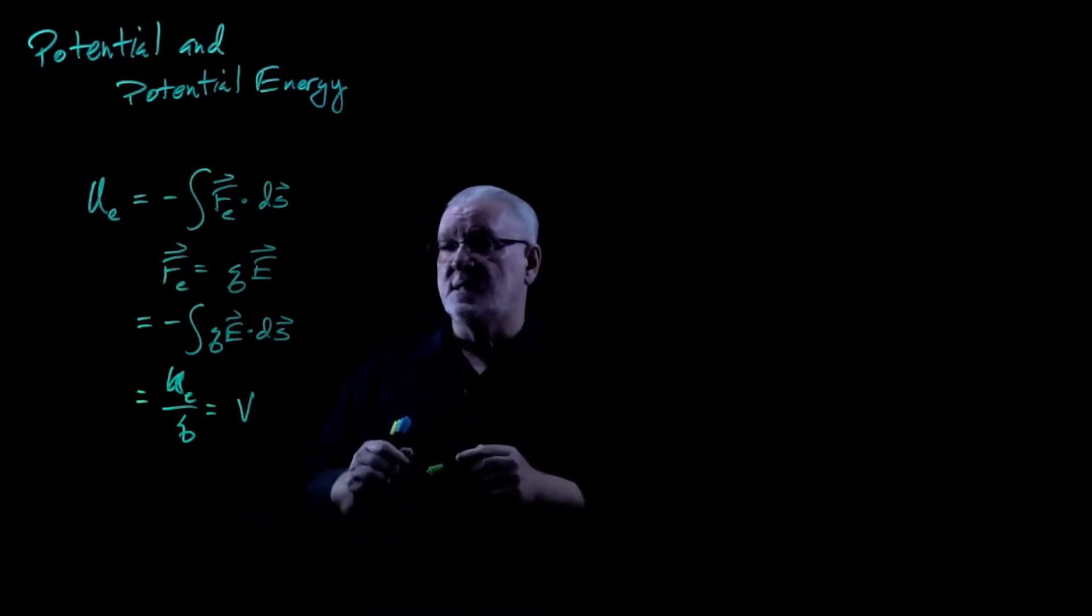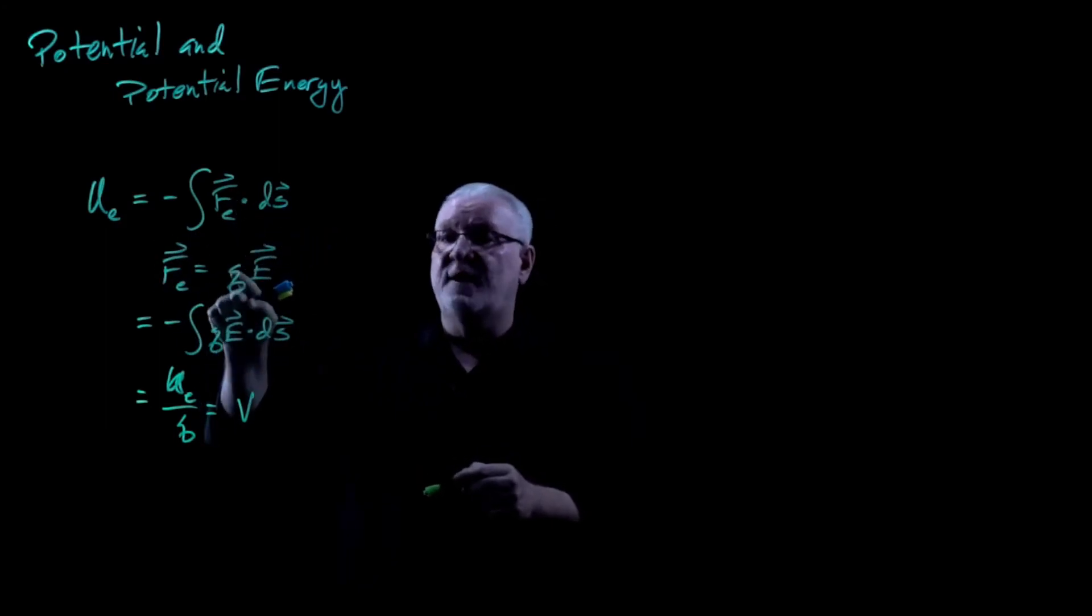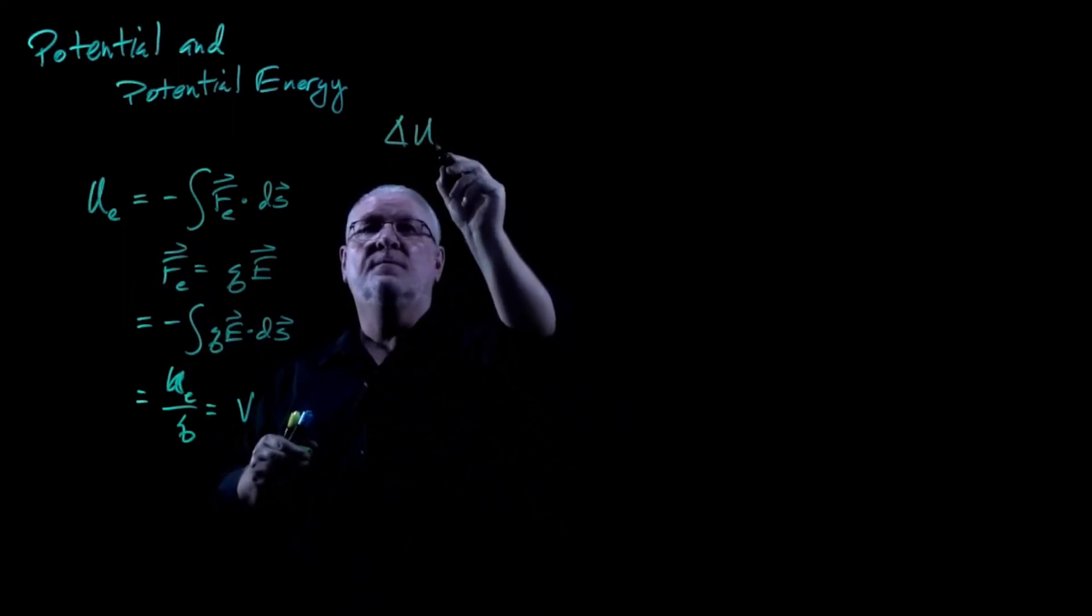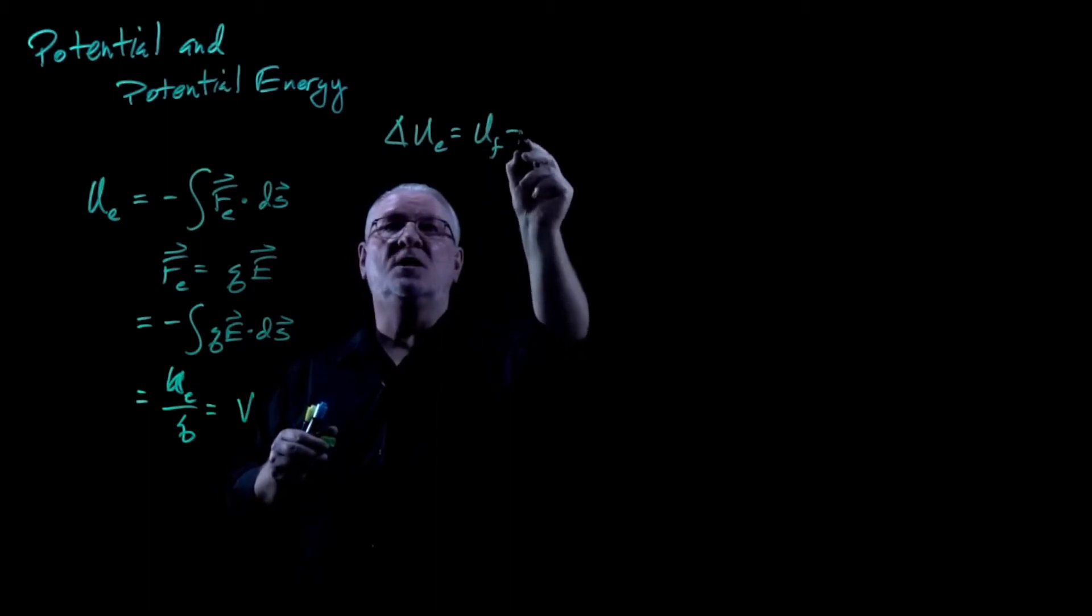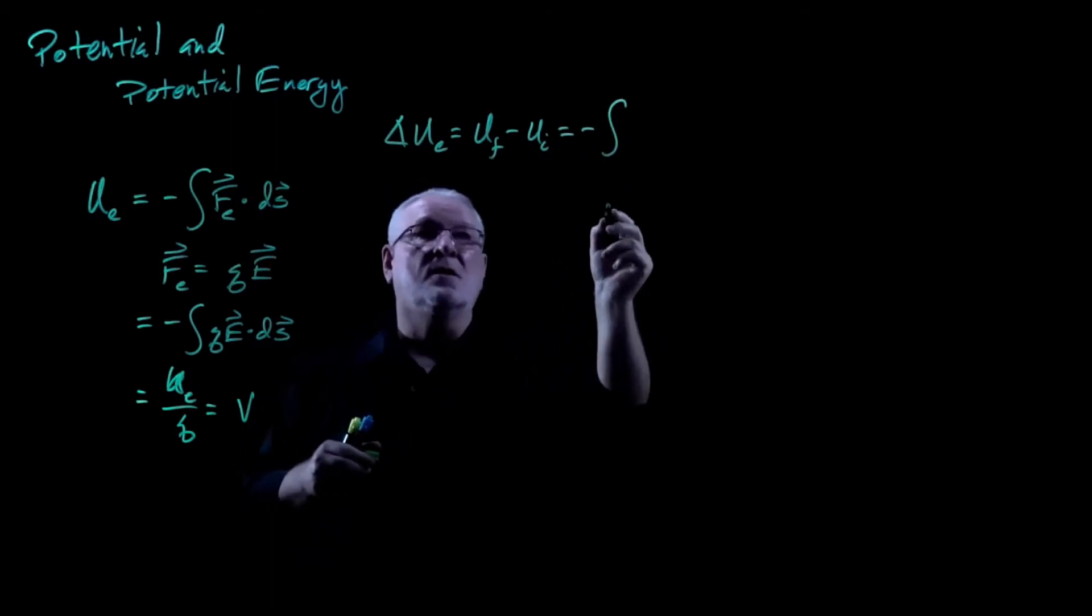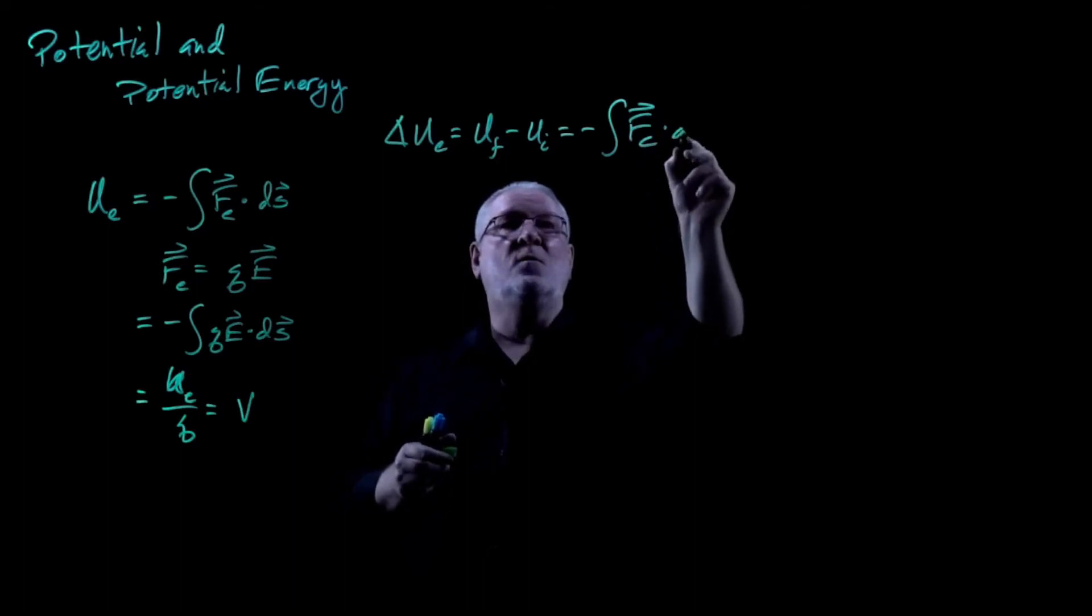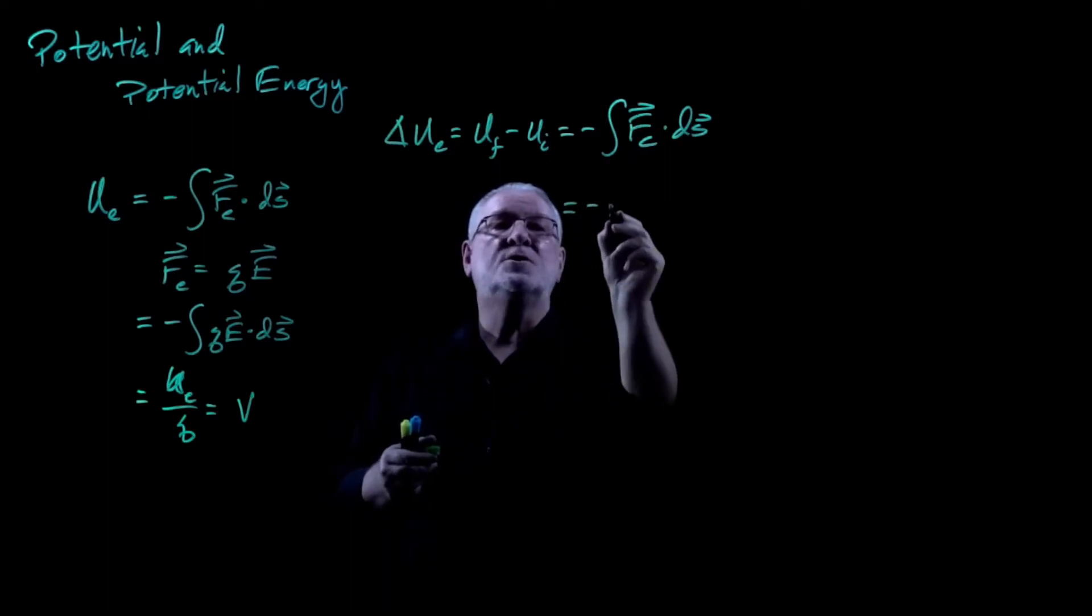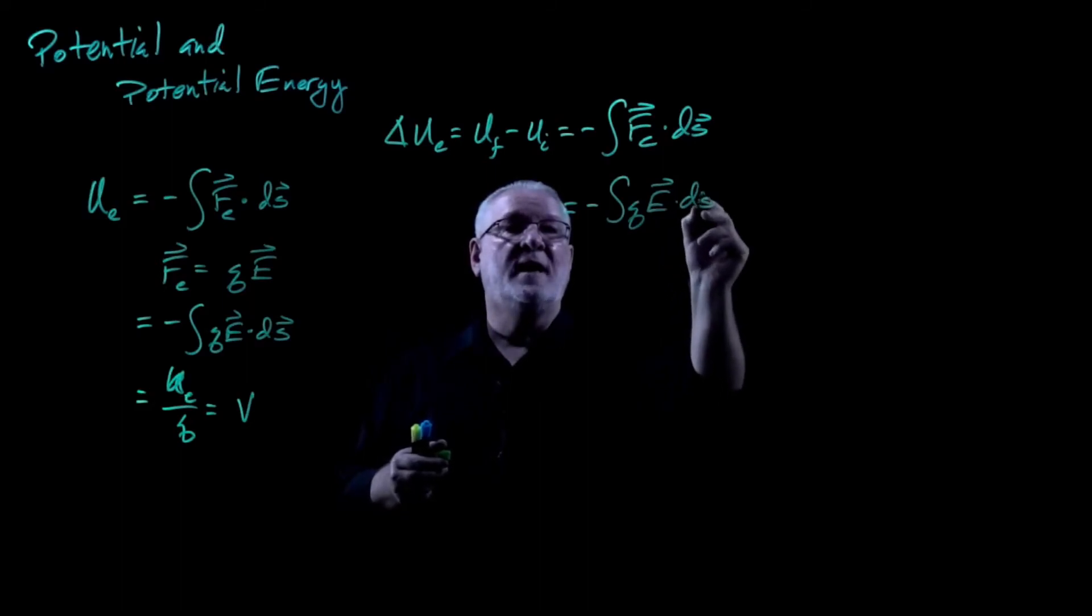So let's summarize these formulas. Because these integrals often involve an initial state and a final state, we can rewrite it as delta U, which is usually the final energy minus the initial energy. And that's equal to negative the integral of Fe dotted with dS. And of course, that's also equal to negative the integral of QE dotted with dS.